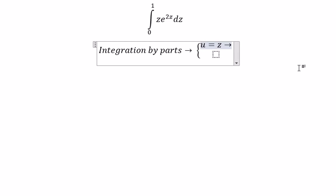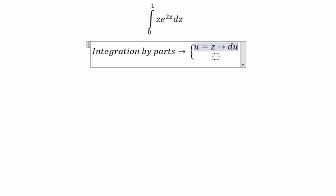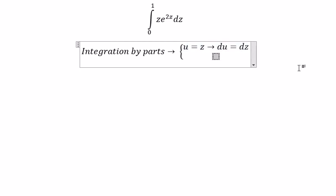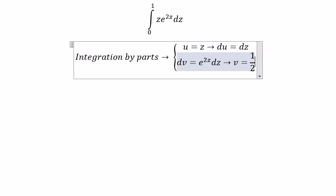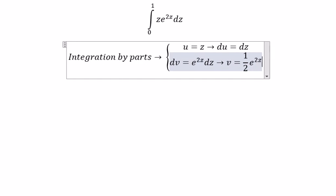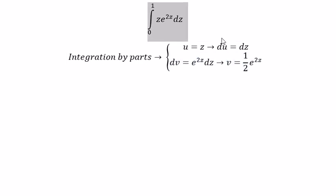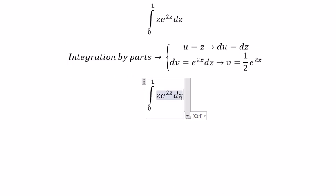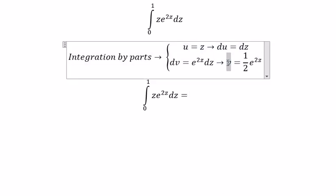In this situation we let u equals z, so du equals dz. For dv we have e to the power of 2z dz, so v equals 1 over 2 e to the power of 2z. Then we form u multiplied by v.